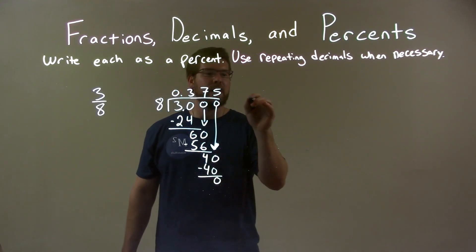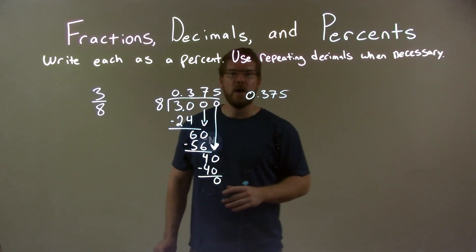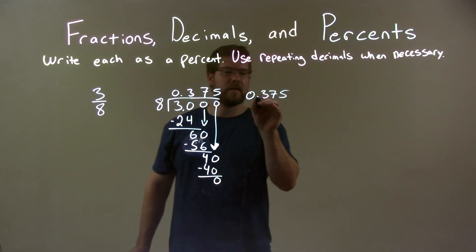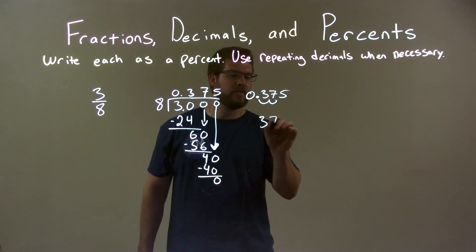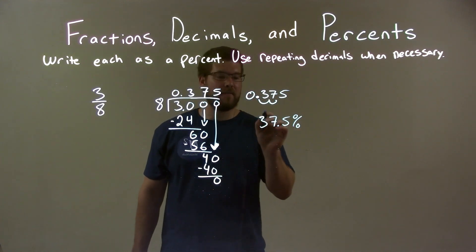We have our decimal. So our decimal is 0.375. Well, to write that as a percent, I take that decimal place, move it two spots to the right, and I'm left with 37.5%. And so there we have it.